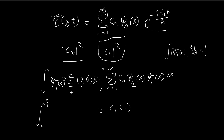So we have the initial wave function, which is √(2/a), times the first stationary state, which is √(2/a) times sine of (nπx/a). With n equal to 1, you get sine of (πx/a) dx. So now we can solve this integral to find our c1.